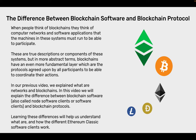When people think of blockchains they think of computer networks and software applications that the machines in these systems must run to be able to participate. These are true descriptions or components of these systems, but in more abstract terms, blockchains have an even more fundamental layer, which are the protocols agreed upon by all participants to be able to coordinate their actions. In this video we will explain the difference between blockchain software — also called node software client or software clients — and blockchain protocols. Learning these differences will help us understand what are and how the different Ethereum Classic software clients work.